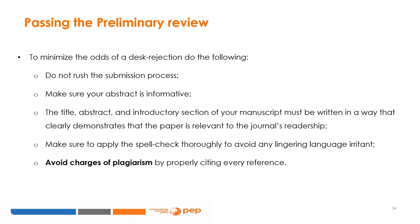To minimize the odds of a desk rejection, the following is suggested. It is important not to rush the submission process — the pressure to publish can create the urge to rush a paper that is not ready. Make sure you present your paper to colleagues at seminars or conferences to help inform your judgment of its readiness. Make sure you follow the rules on how to write an adequate abstract, as a poor abstract will make it easier to get a desk rejection. Your paper's title must be informative, and the introductory section must clearly demonstrate that the paper is relevant to the journal's readership. Make sure to apply the spell check thoroughly to avoid any lingering language irritants, and if you can afford professional proofreading, do not hesitate to use it. Avoid charges of plagiarism by adequately citing every reference.